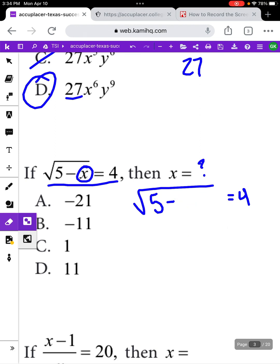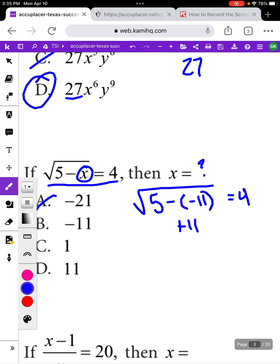Now I'm going to try plugging in negative 11. Square root of 5 minus, plug in negative 11. We're going to do the same steps to see if it equals 4. If you have minus and negative, you can change that into plus. So inside my square root I have 5 plus 11. We're checking to see if that equals 4. Then we can simplify whatever is under the square root. 5 plus 11 is 16. We want to know, is the square root of 16 equal to 4?